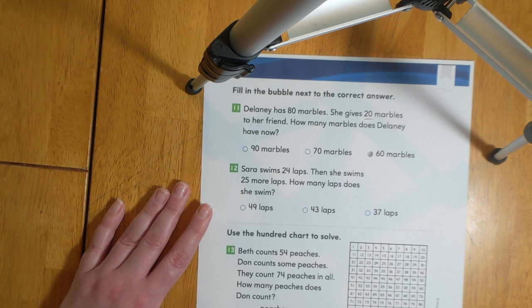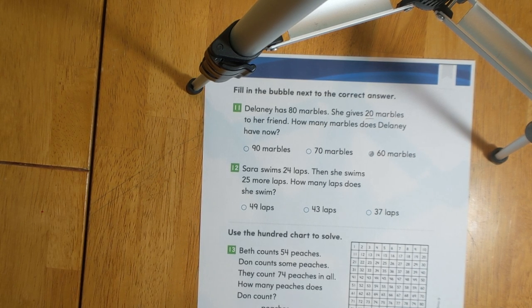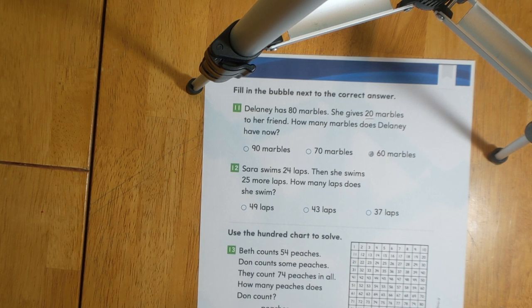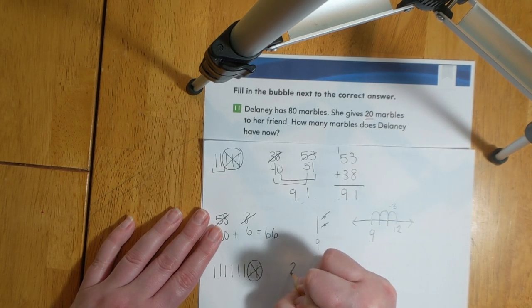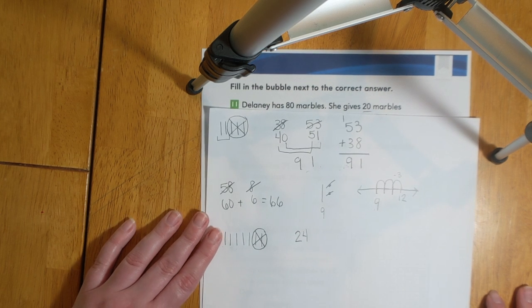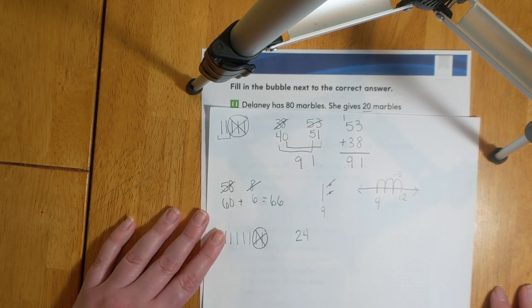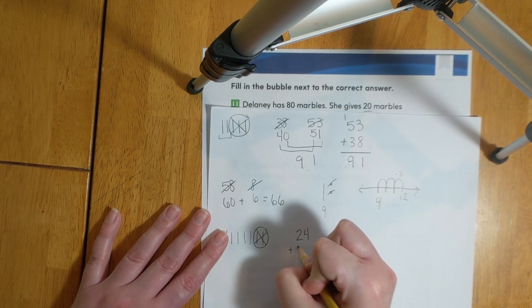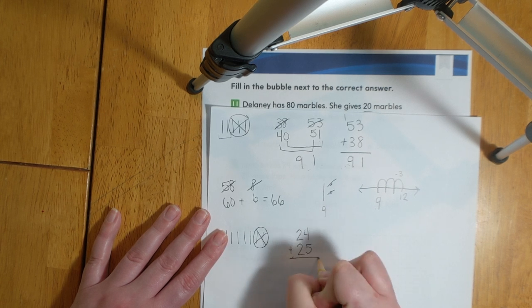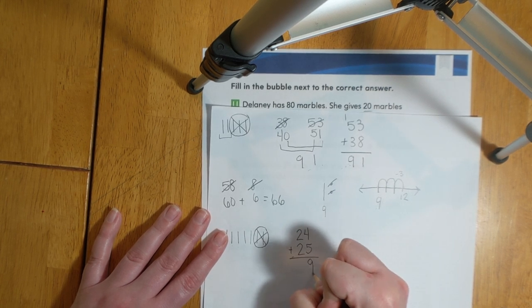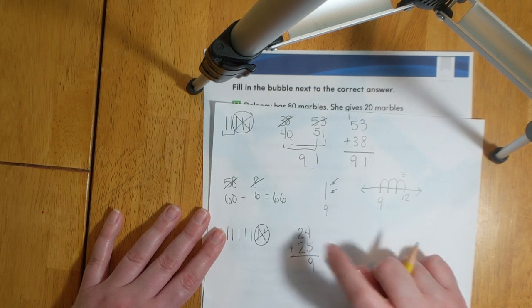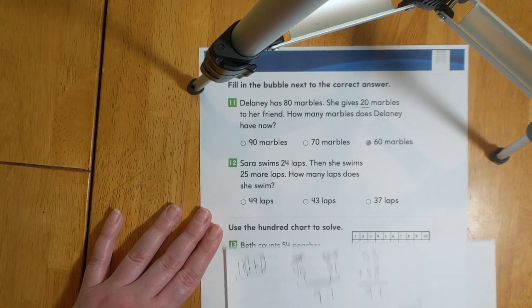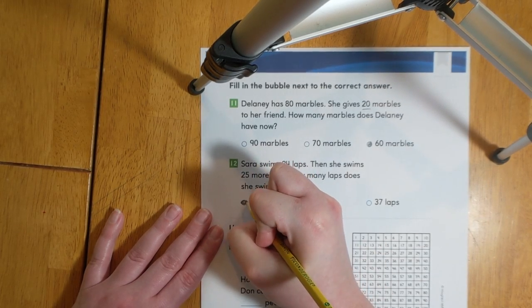Number 12, Sarah swims 24 laps. Then she swims 25 more laps. How many laps does she swim? Let's go ahead and use traditional addition to solve. Sarah starts by swimming 24 laps. Then she swims 25 more. The word more tells us that we're going to add. 4 plus 5 equals 9. When the 1s add up to 9, everything's fine. 2 plus 2 equals 4. So all together, Sarah swam 49 laps.